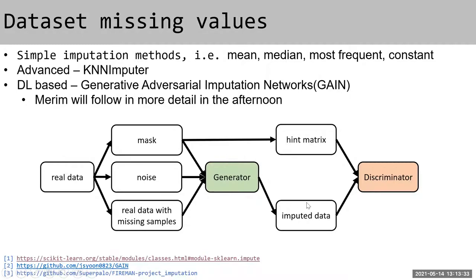The basic idea behind GAIN is training two networks: a generator and a discriminator. You train the generator using real data — creating noise, adding missing samples, adding the noise — and send all of these to the generator's input. You then use a mask that defines the missing samples as a hint matrix for the discriminator, and simultaneously train both. The discriminator learns to discriminate between real and fake samples, while the generator gets better at creating fake samples that look like real ones.